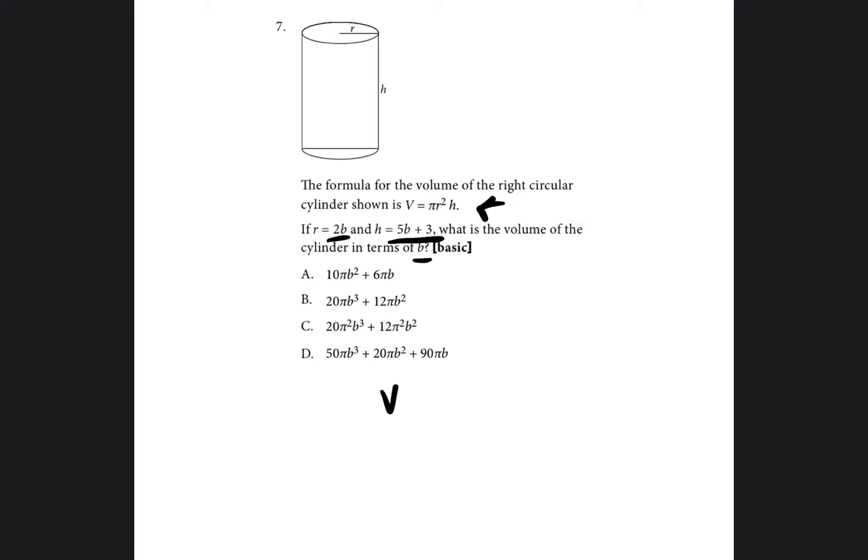So they want us to write the equation V equals pi r squared h. And for r, they want us to write 2b, so V equals pi. Instead of writing r, I'm going to write 2b squared. And then instead of writing h, they want us to write 5b plus 3.